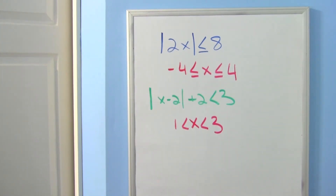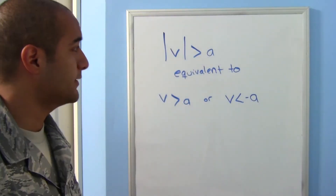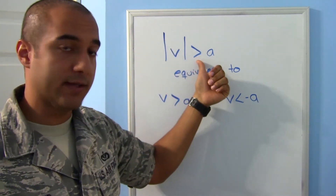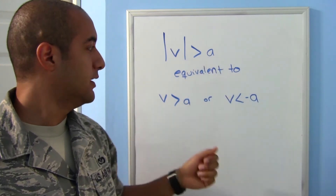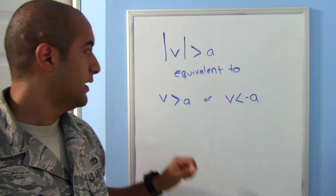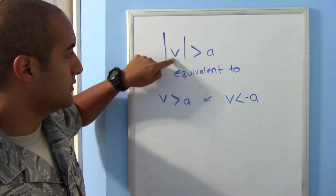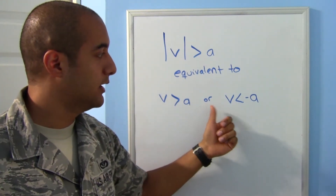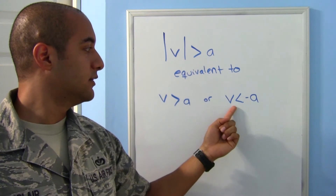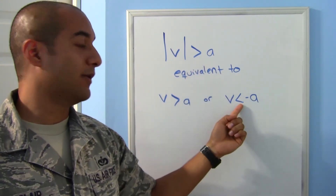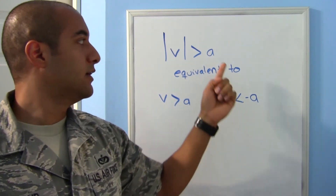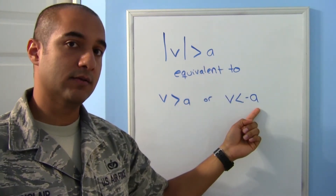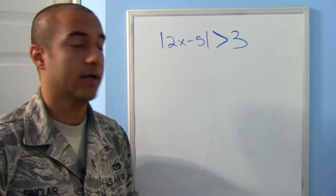Now let's look at when the absolute value is by itself but has a greater-than sign. Things work differently: you split into two separate inequalities. The first split looks exactly like the original problem with a greater-than. The second split switches to a less-than and also makes the number on the right negative — so v is less than negative a.